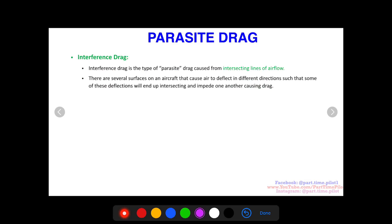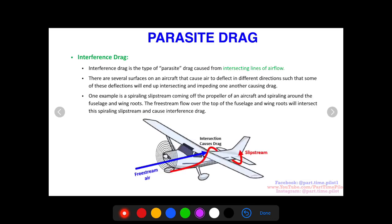Some of these deflections will end up intersecting and impede one another, causing drag. While the wings cause the air to just stay attached and slip past over the top and below, the propeller is totally disturbing the air, causing vortices. These different streams of air might run into each other and bounce off each other and cause drag because they're disrupting each other's flow.